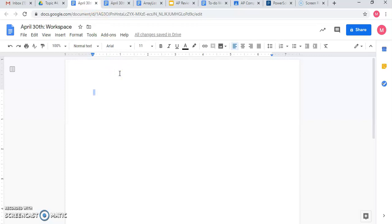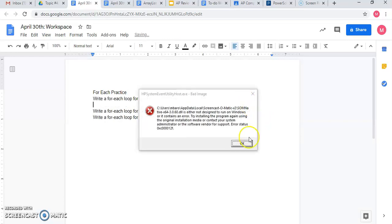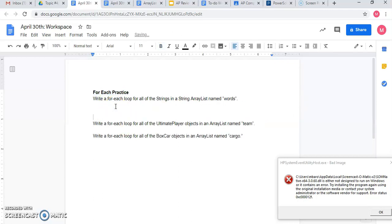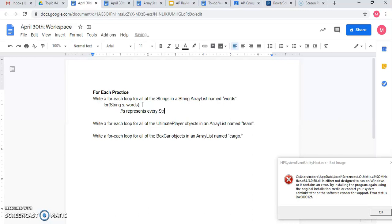I'm going to go ahead and open up a little workspace for today. I'm going to do some for each practice. And I want to make sure that I can translate words into these for each loops so I know how to write them down. Write a for each loop for all of the strings in a string ArrayList named word. So we write for. The first thing that we always write is the type of ArrayList. And then I'm going to give a variable that represents each value in the ArrayList. So I'll put S because it's an easy letter to use. And then I'm going to put my ArrayList name. And now S represents every string of words that I can loop through. I can do s.length. I can print s.getIndex. I can use any of the string methods on S there.